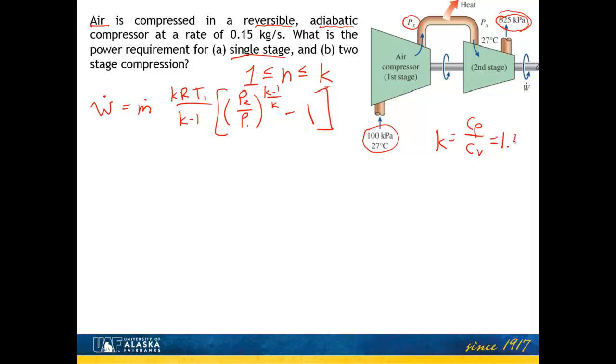And for air, that has a value of about 1.4. It's a weak function of temperature, but for now we'll just assume it's constant at 1.4. All righty. So we're given what the mass flow rate is in the problem. We know the value of k for air is 1.4. T1, which is that initial temperature, is 27. We're going to need to convert that into absolute degrees before we plug it in there. And we have our two pressures, P2 and P1, which is 625 or 100. So this is just a matter of plugging a bunch of numbers in.